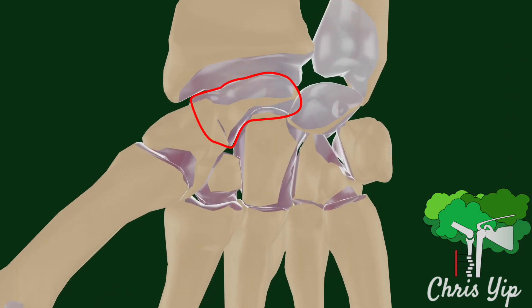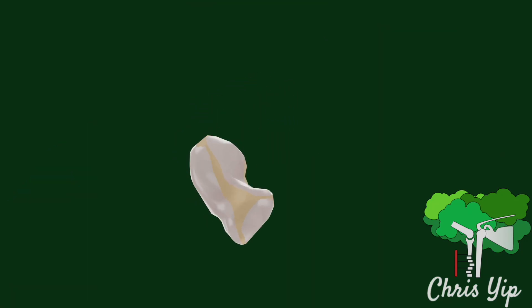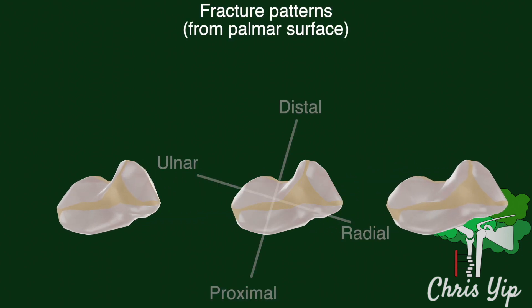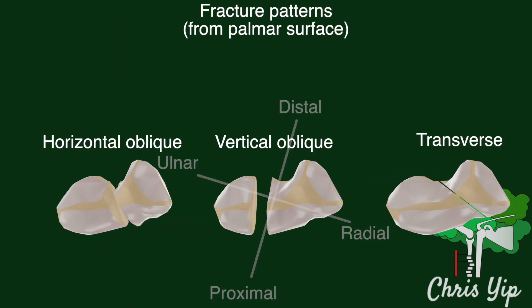The scaphoid is the most commonly fractured carpal bone. Their fractures can be described according to their patterns, which are horizontal oblique, vertical oblique, and transverse.